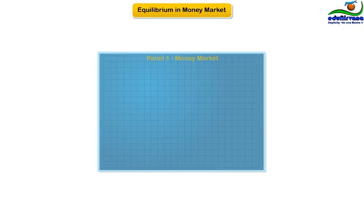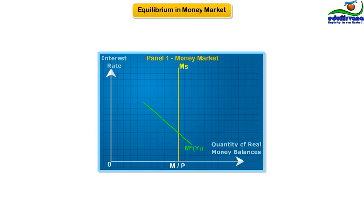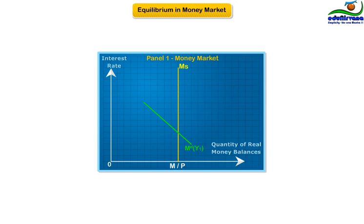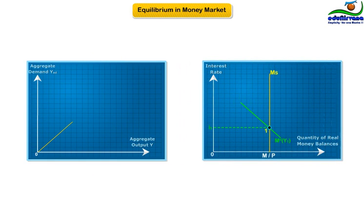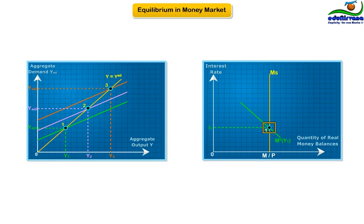For the time being, let us assume that the supply of money is fixed in the economy in the short to medium term and that it is fixed by the central government. Now, let us look at how money demanded and money supply reach equilibrium. The level of interest rates is determined by equilibrium in the market for money, at which point the quantity of money demanded equals the quantity of money supplied. The figure depicts what happens to equilibrium in the market for money as the level of output changes.